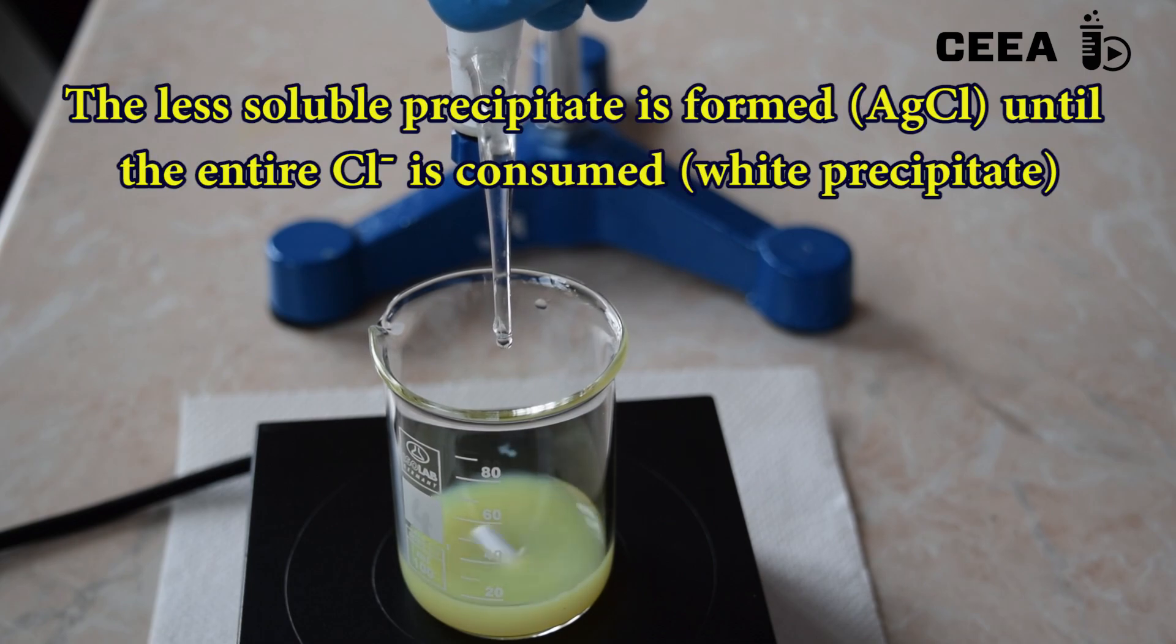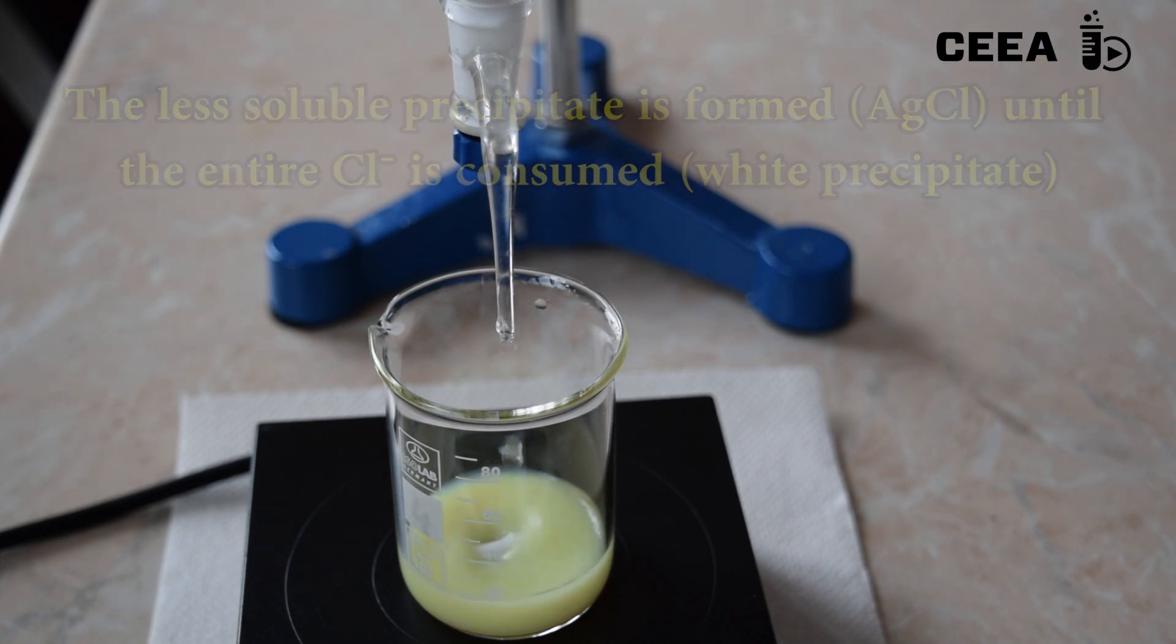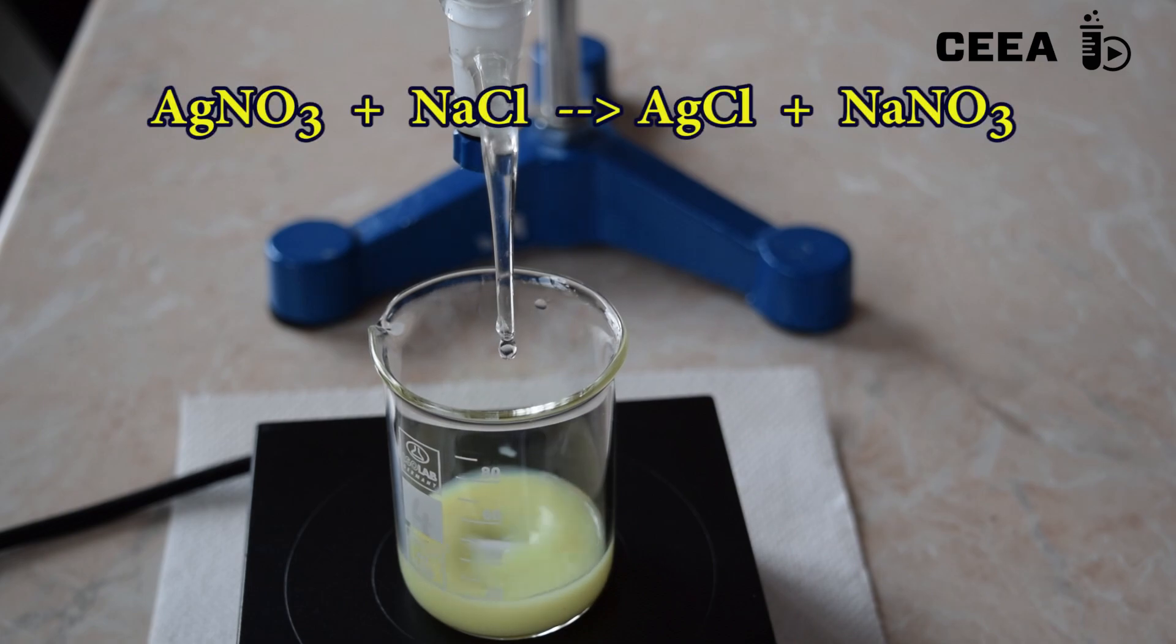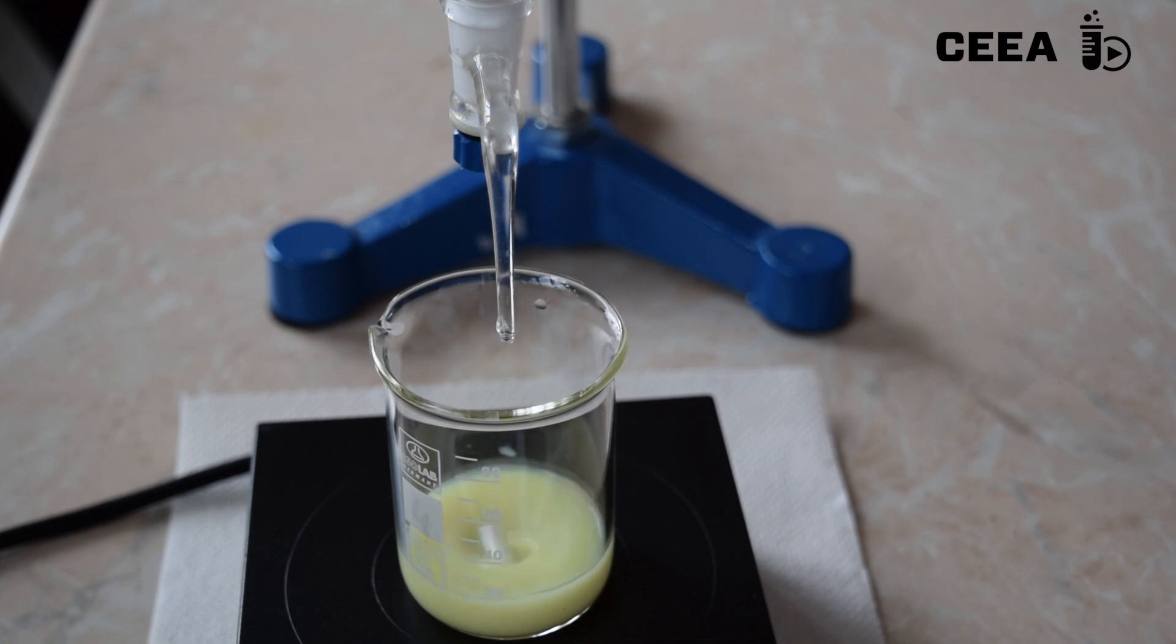Observe the turbidity appeared as insoluble silver chloride is formed. As the titration goes on, we observe the increasing amount of precipitate.